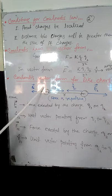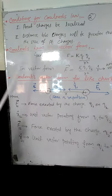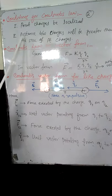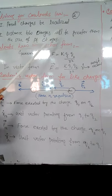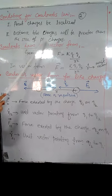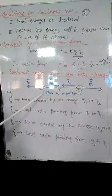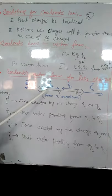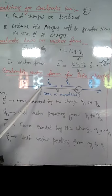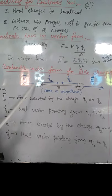Means point charges should be at rest. And second condition is distance between charges will be greater than the size of the point charges. Means point charges should be of small size. And their central distance should be greater than the size of the charges.